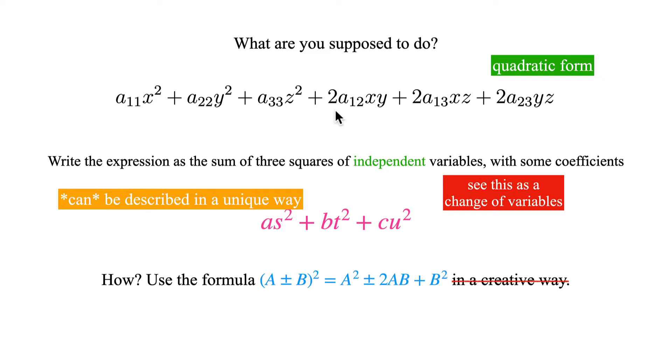The thing is that we are supposed to rewrite this expression into this expression. The requirement is that these variables s, t and u, now we have three new variables, sometimes less but never more, are seen as a change of variables. This is a kind of description of what it means that these variables are independent. All these variables s, t and u are expressed with help of x, y and z, in such a way that this is a valid change of variables.